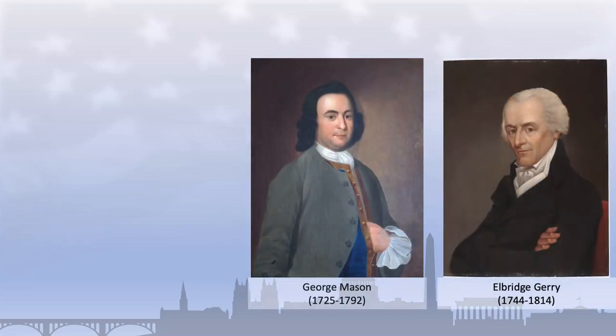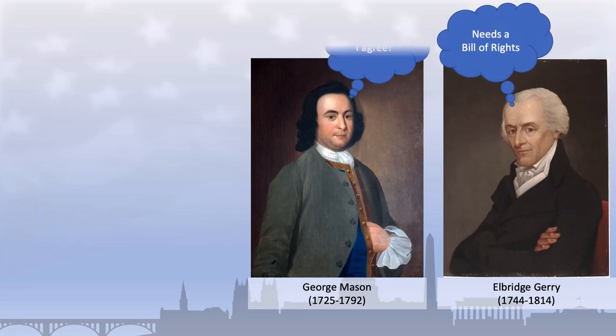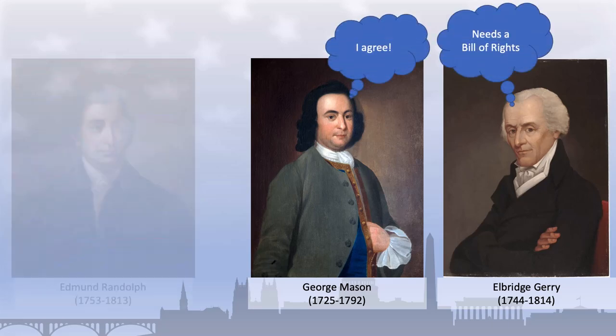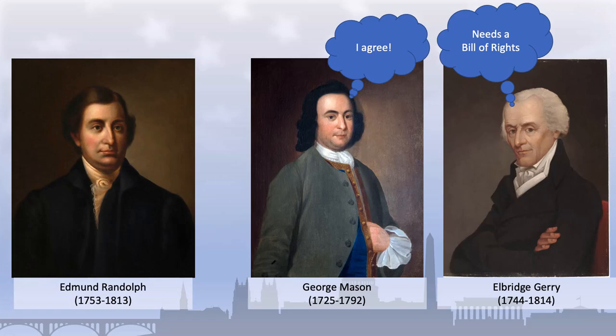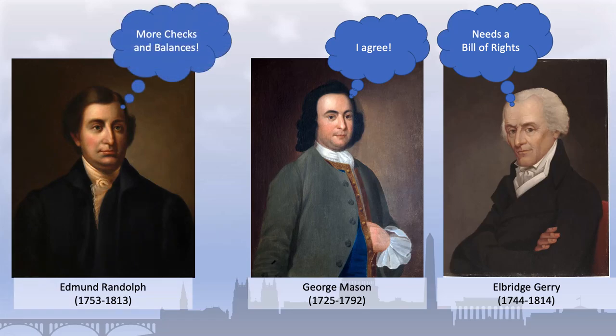Elbridge Gerry of Massachusetts and George Mason of Virginia both declined to sign the document because it did not include a Bill of Rights. And Edmund Randolph of Virginia declined to sign it because he felt the document had insufficient checks and balances. These positions, and in particular the question of the Bill of Rights, would soon become a major sticking point in the debate over ratification.